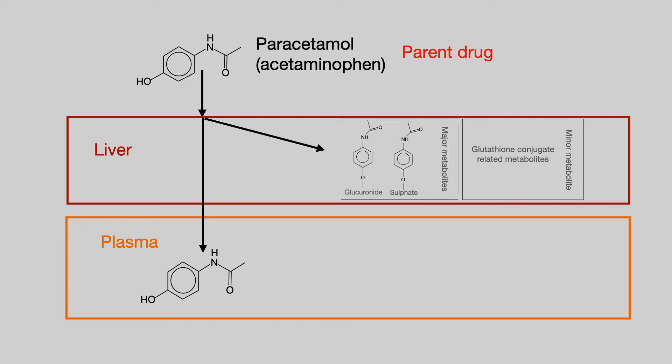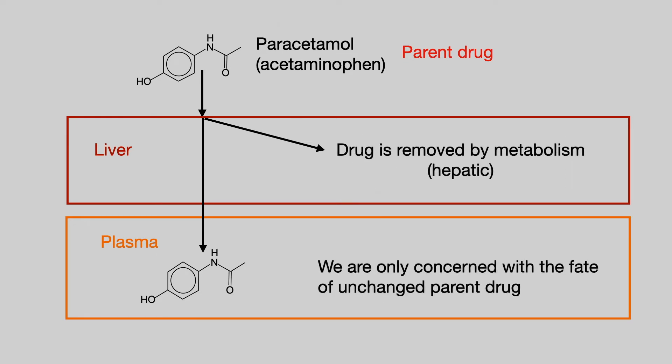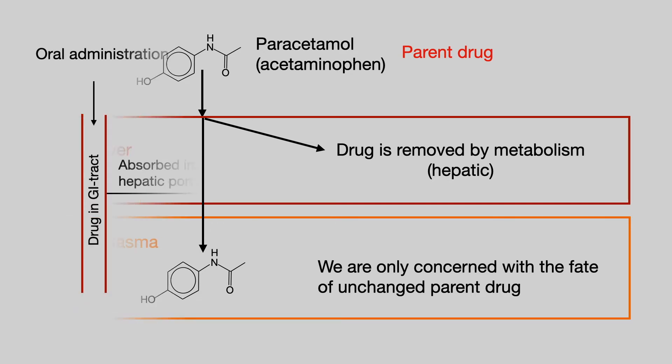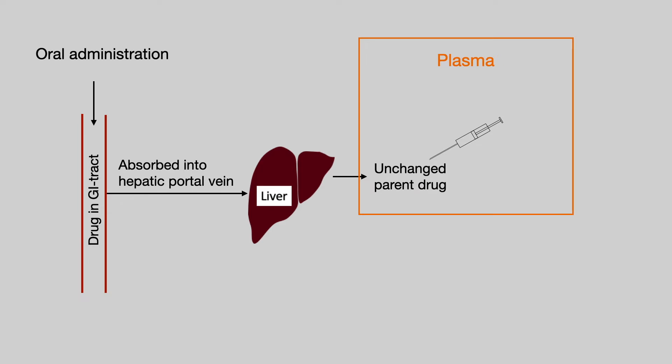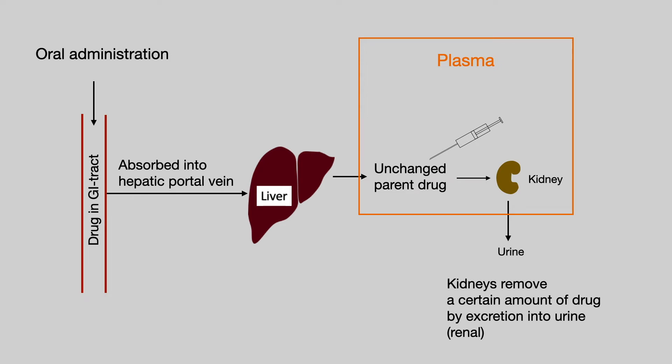The detail of how the liver metabolises paracetamol is not important to our current story. The key message is that drug is removed from circulation by metabolism. In this case, it's the liver metabolising the drug, and so we call it hepatic metabolism. Our concern is entirely with the fate of the unchanged parent drug. Going back to our model, the blood is filtered by the kidneys, and the kidneys will remove that drug into urine, where it is excreted. This is known as renal excretion.